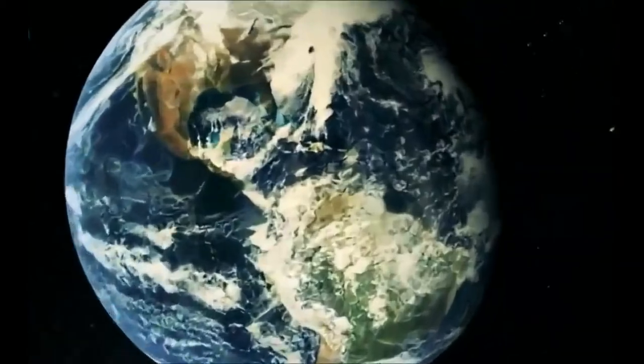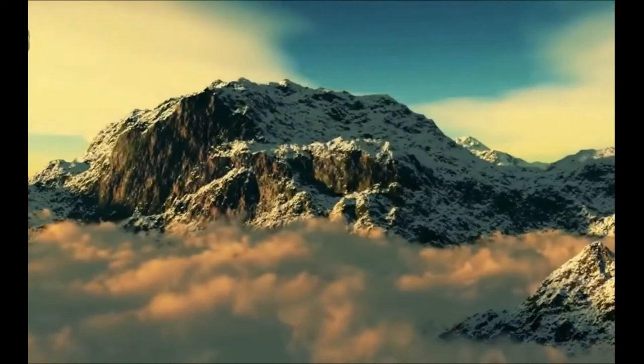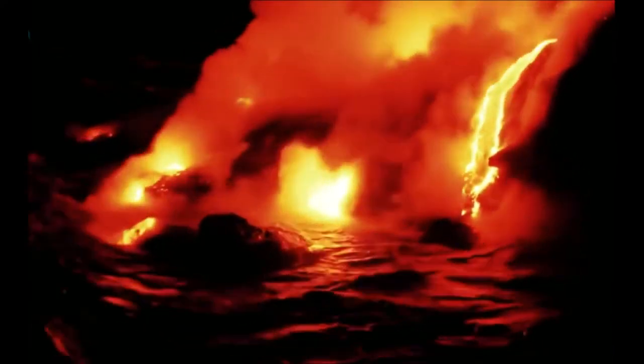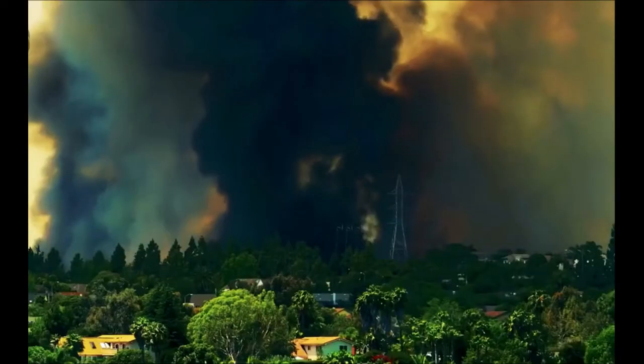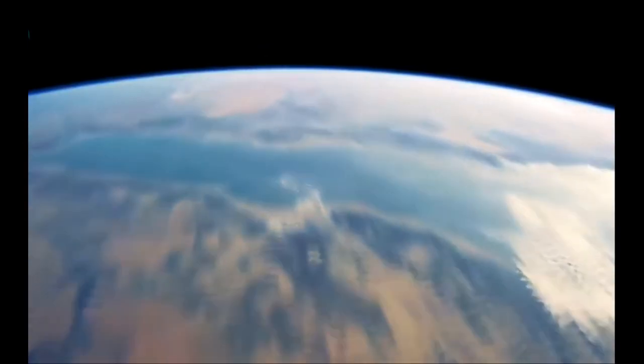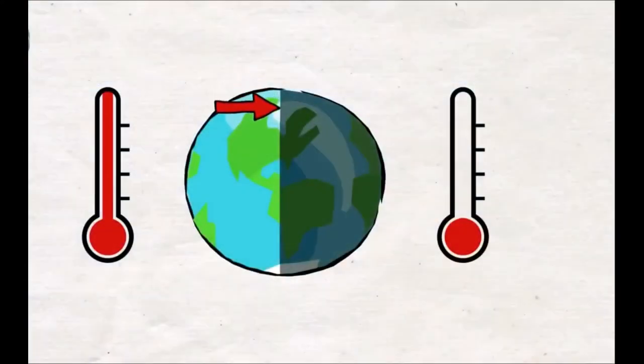There might still be places on Earth where the climate would be habitable, but on the two extreme sides, it might prove difficult for life to survive, assuming that anything survived the previous catastrophes. If there were any appreciable amount of life left on the surface of the planet, it would now have to survive in the twilight strip of land between the two halves.